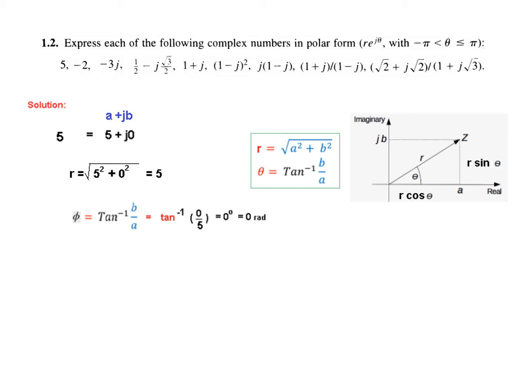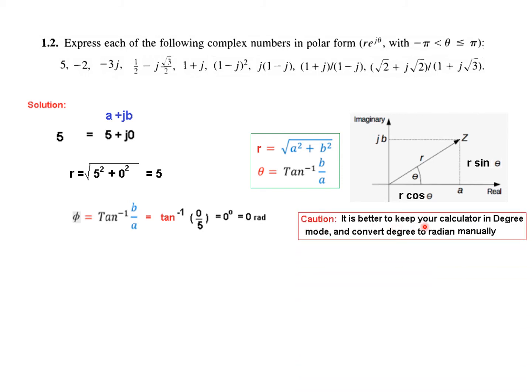A word of caution: it is better to keep your calculator in degree mode and then convert degrees to radians. You can calculate up to the angle directly from the calculator in degree mode, then convert to radians. Our final answer is 5 equals r e to the j theta, where r is 5 and theta is 0, giving us 5 e to the j0.